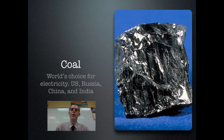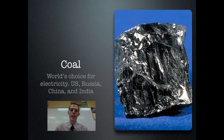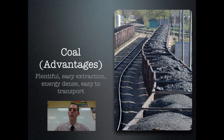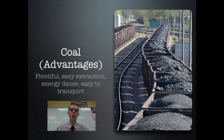Coal is the world's leading choice for electricity generation. The major coal-producing countries are the US, Russia, China, and India, all with tremendous reserves. As for advantages of coal: it's plentiful, most deposits are close to the surface, and it requires minimal processing — you pull it out of the ground and burn it. Because it's easy to use and plentiful, it is cheap, energy-dense, and easy to transport by truck, boat, or train.